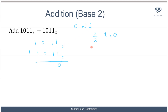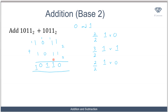Then 1 plus 1 plus 1 is 3 — greater than 1, so divide by 2: that's 1 remainder 1. Write 1, carry the 1. Then 1 plus 0 plus 0 is 1 — not greater than 1, so write it directly. Finally, 1 plus 1 is 2 — greater than 1, so divide by 2: that's 1 remainder 0. Write 0, bring down the 1. So the result is 10110 in base two.